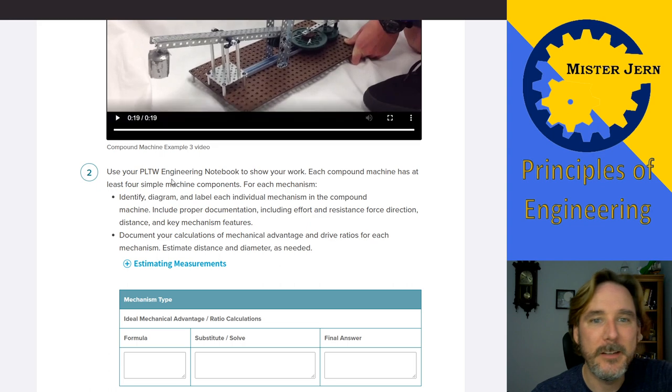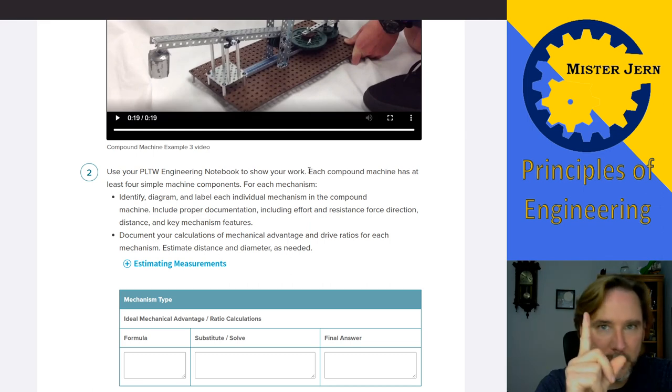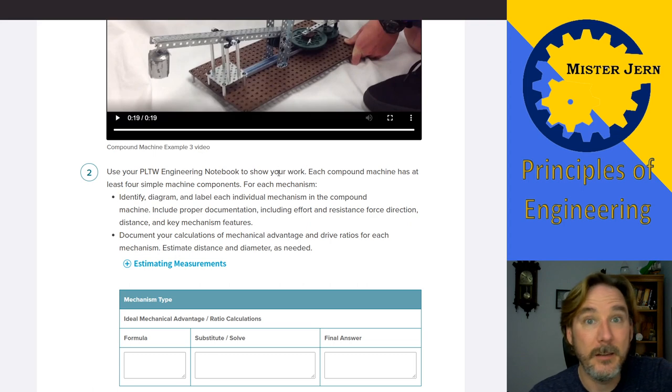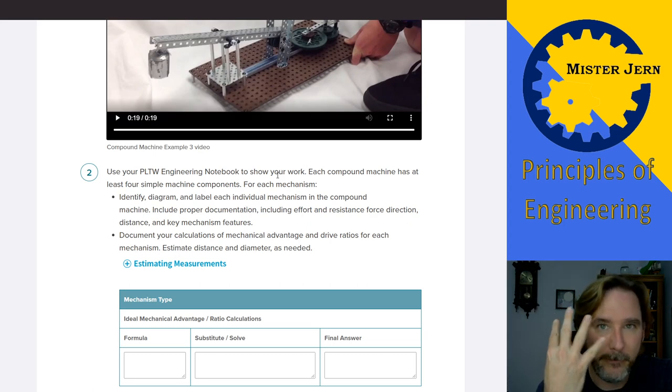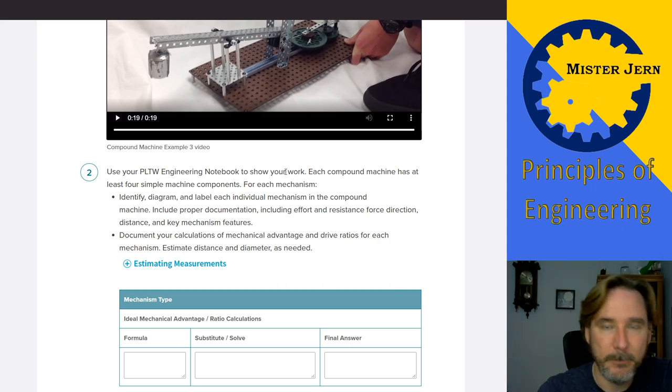Secondly, use your PLTW engineering notebook to show your work. What work? Well, basically here it is. Each compound machine that you want, so each of those three of which you're going to choose one, has at least four simple machines components. It's made up of at least four simple machines. Okay, go back and look at all the previous things you learned about, gears, levers, all that stuff.